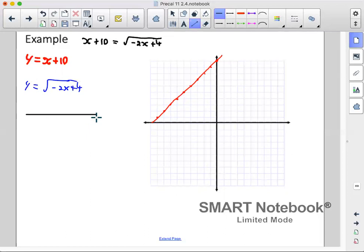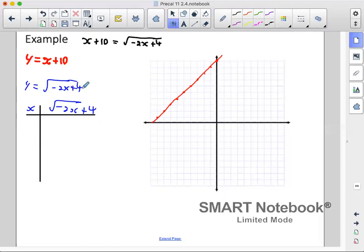Looking at this, I can see that the largest x value I can have would be positive 2. The reason for that is if I put positive 2 in here, negative 2 times 2 gives me negative 4 plus 4 gives me 0. If I want a higher number like 3, it would give me negative 6 in here. Negative 6 plus 4 would give me negative 2, so I can't do that. I'll have to go down in numbers.